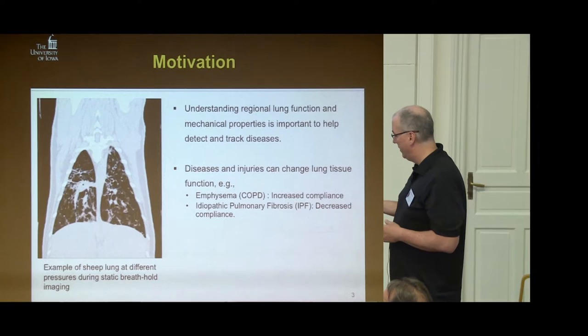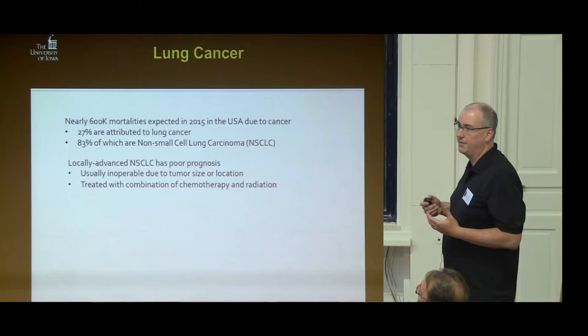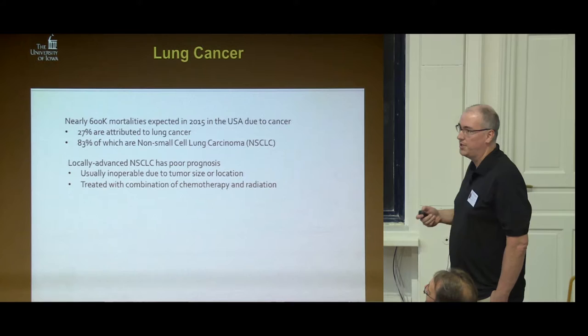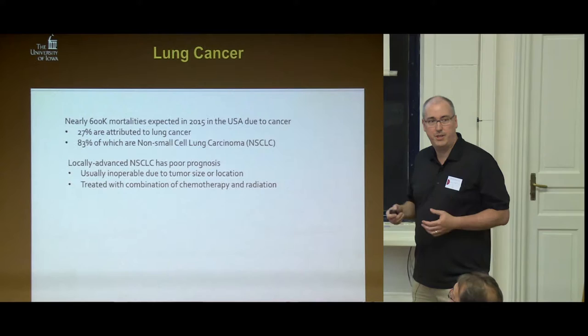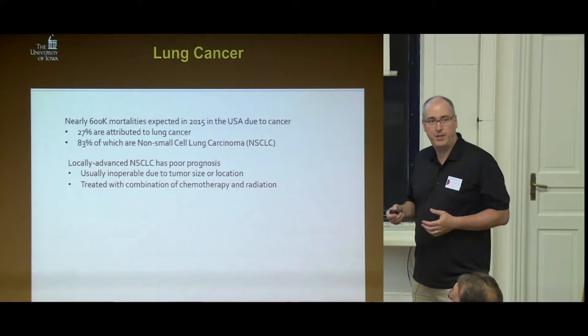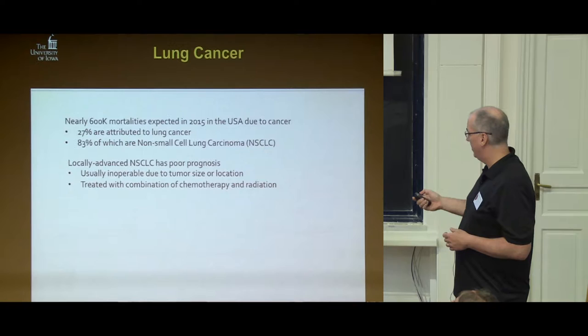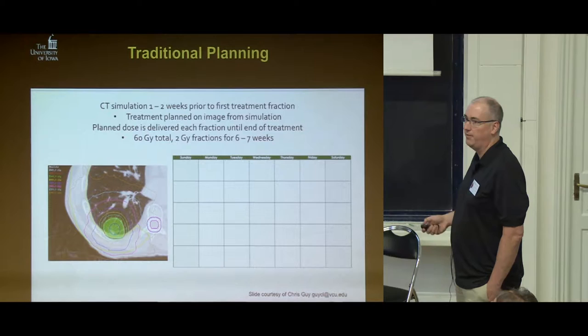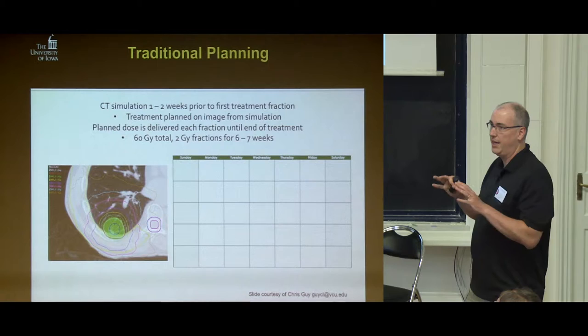The second application is cancer. Nearly a quarter of the people in the United States die from lung cancer, and most of these cases are non-small cell lung carcinomas. These are really hard to operate on because of their size or location, so the treatment we use is radiotherapy and chemotherapy. Here's a treatment plan: the tumor is highlighted in green, and the isodose curves show how much dose or treatment we're giving to the tumor.